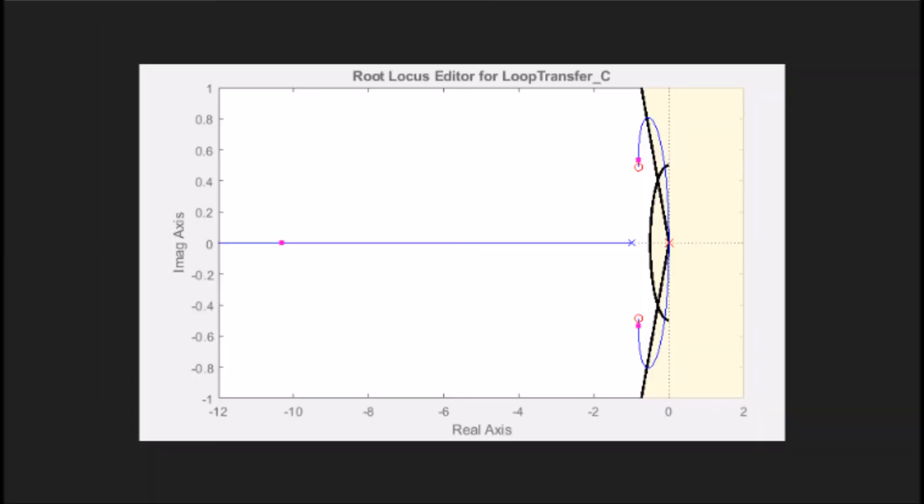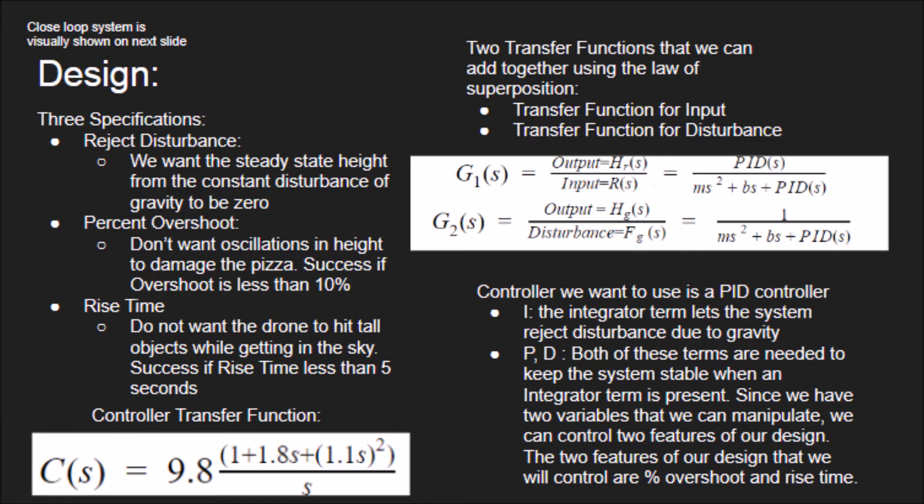Using the CISO tool, we can find poles and zeros on our transfer function that help fulfill these requirements. From this, we get a controller that is shown in the bottom left corner. We have to have an integrator term so we can reject disturbance from gravity. Then we also have a proportional and derivative term that helps keep the system stable and allows us to control two features of our design, which are our percent overshoot and our rise time.